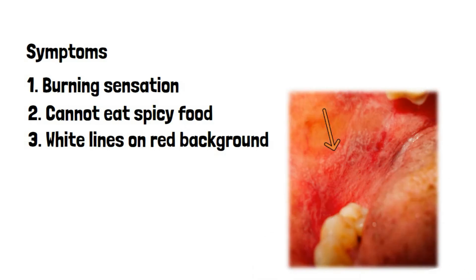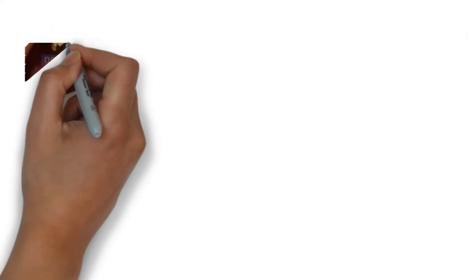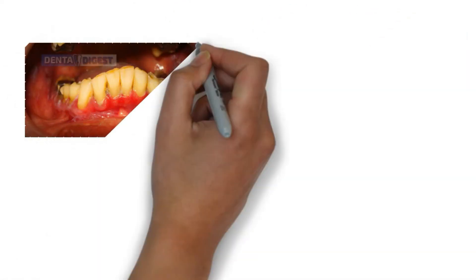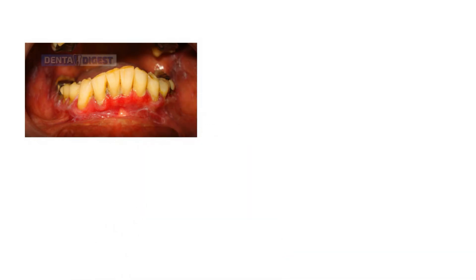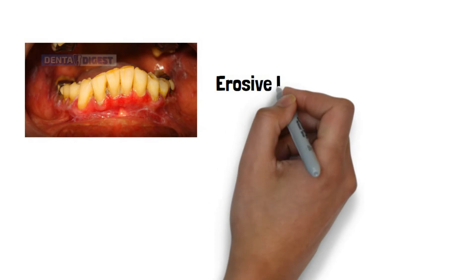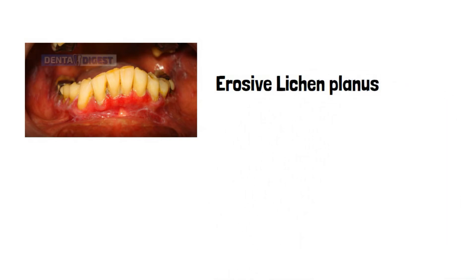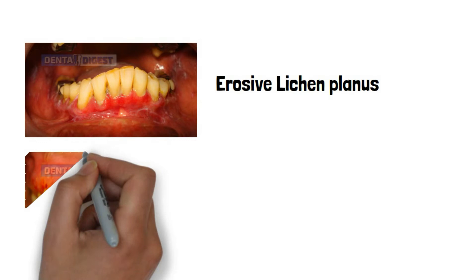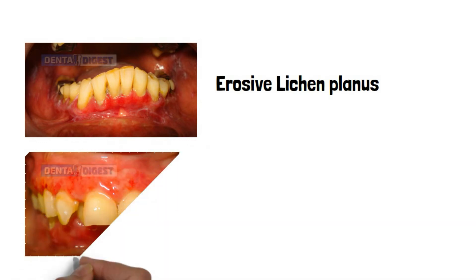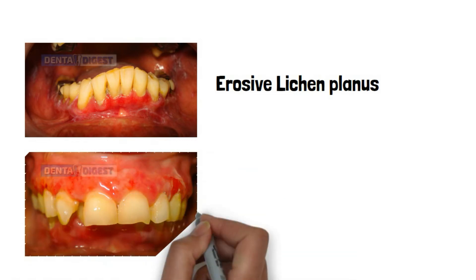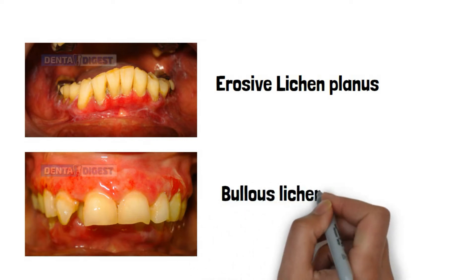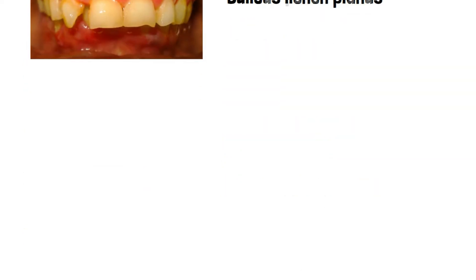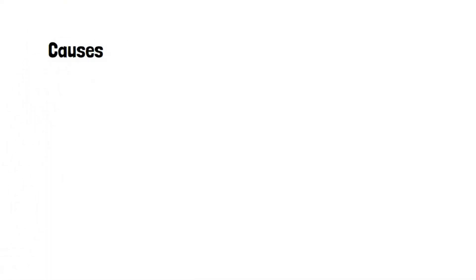This is called reticular lichen planus. In some patients we do not see any white lines, but some reddened or inflamed areas can be seen; such patients with severe burning sensation are usually diagnosed with erosive lichen planus. In a few cases, oral lichen planus patients find bubbling of the affected area which ruptures and bleeds profusely — this condition is a variant called bullous oral lichen planus.